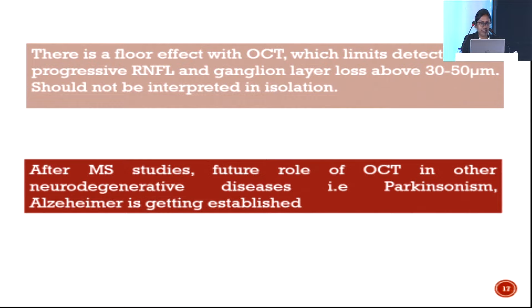There is a floor effect with OCT: when RNFL thickness reduces to 30–40 micrometers, OCT becomes of no value because the measurement levels out. In advanced cases where ganglion cell layer and retinal fiber layer are less than 30 micrometers, visual fields should be obtained rather than OCT. Following MS studies, the role of OCT in other neurodegenerative diseases such as Parkinson's and Alzheimer's is also being established.